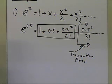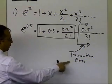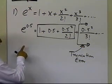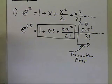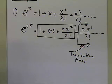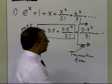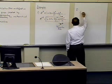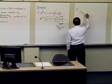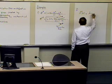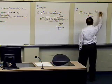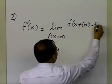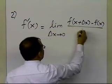In the past, giving only the series example led many students to think truncation error is only related to series, but there are other examples where a mathematical procedure gets truncated. If you remember your differential calculus class, the derivative of a function is defined as the rise over run of a secant line divided by delta x.